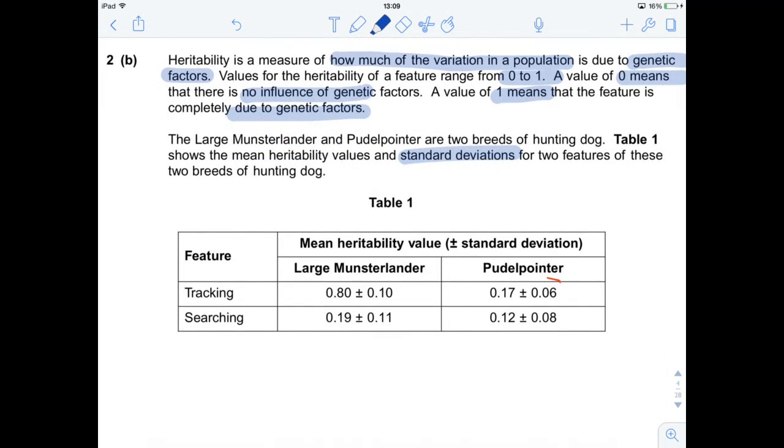But let's have a look. There's our data. The large munsterlander and the poodle pointer features tracking and searching and some information about how much genetics is a factor. So instantly we can see that there's a big old number here, 0.8. That is really, really close to one. So that is really high in terms of heritability, meaning it's almost entirely controlled by genetics. So let's have a look and see what the question wants.